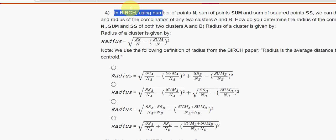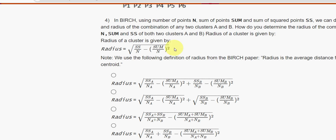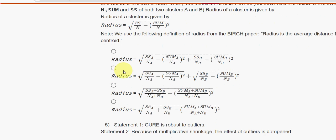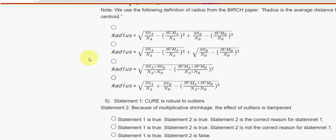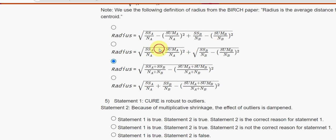Fourth question: using the number of points n, sum of points, and sum of squared points SS, they are asking how you determine the radius of a combined cluster — which of the following is the formula for radius with the given notations. For the fourth question, I have got the answer as the third option.